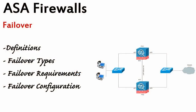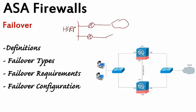ASA Firewalls Failover is going to be a very interesting topic. Why? We love redundancy. We put two routers and run HSRP. We connect two ISPs. We put two core switches, connect two cables, and set up EtherChannels. We love redundancy — it is important.